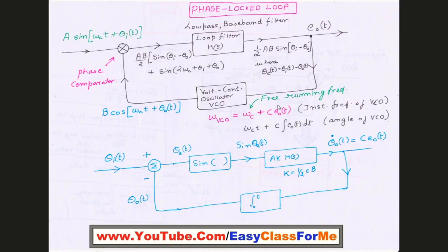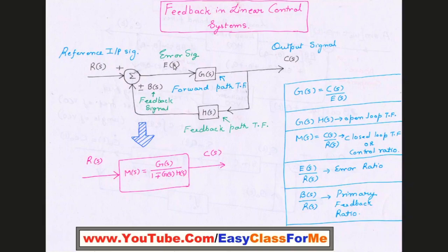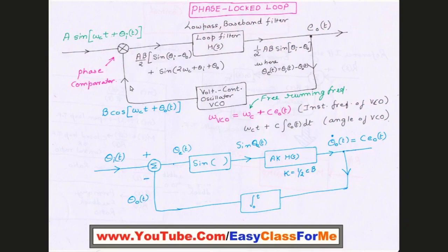One important point: do not confuse E₀(t) with the error signal in the original diagram. Here we call it error signal, but the terminology is slightly different. In the original diagram this error signal appeared before the output. In PLL terminology, what we have received after this particular point is called the desired output. If we talk in terms of the assigned symbols, everything will be clear.